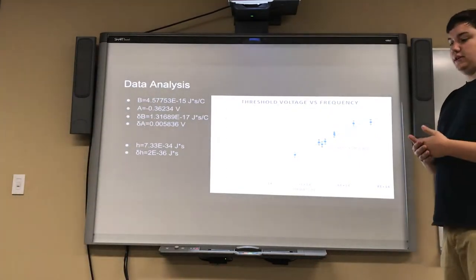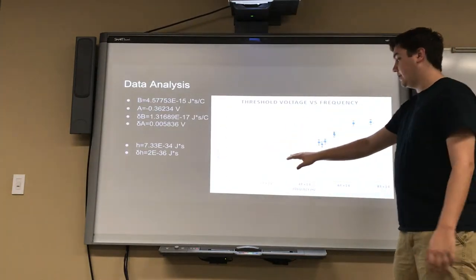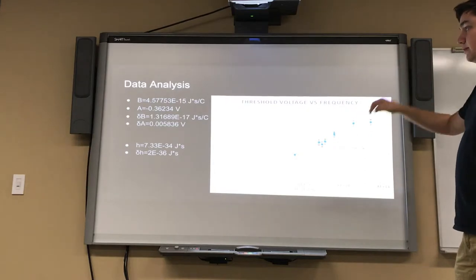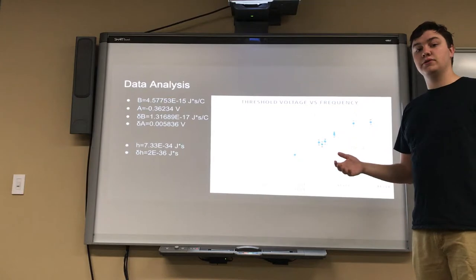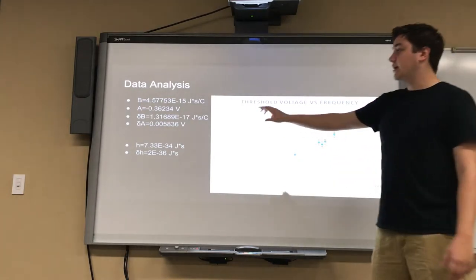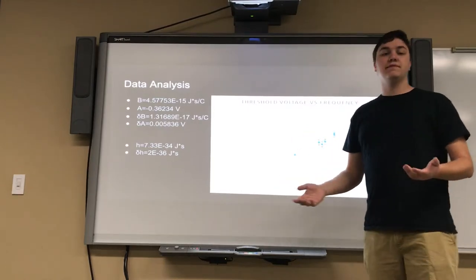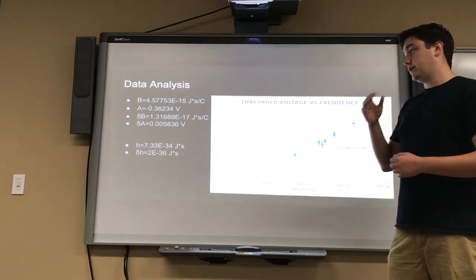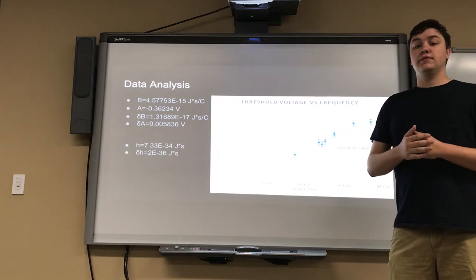So when we compared the frequency of the wavelength to the threshold voltage, we found a fairly linear trend between the two. Finding this linear trend, we completed a least squares data analysis where we found the slope of the linear regression to be 4.57 times 10 to the negative 15th joule seconds per coulomb with an error of 1.3 times 10 to the negative 17th of the same units.